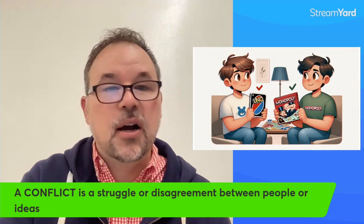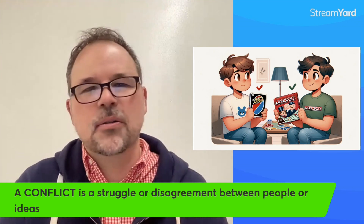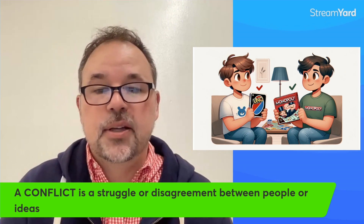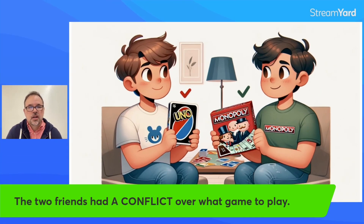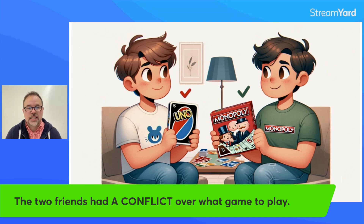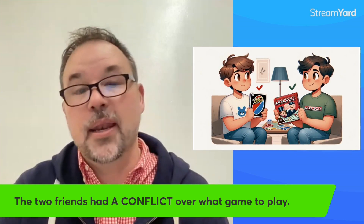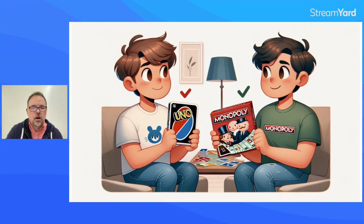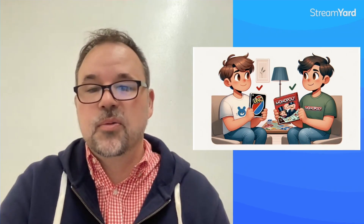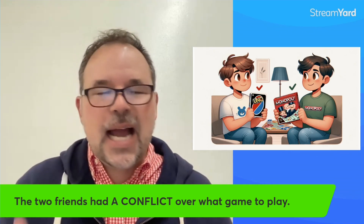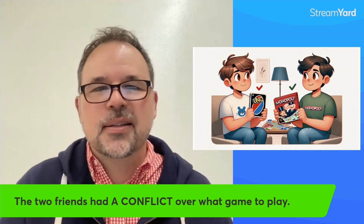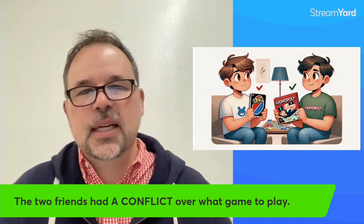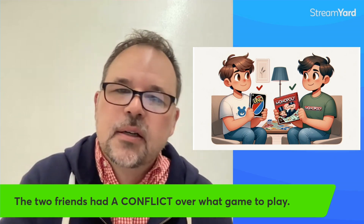The next one is 'conflict.' A conflict is a struggle or disagreement between people or ideas. In the picture, maybe there are brothers or twins — one is clearly a Monopoly fan with a Monopoly t-shirt and is holding a Monopoly box, while the other wants to play Uno and has Uno cards on the table. Which do you like better — Uno or Monopoly? I have to go with Uno because it's a quick game; Monopoly takes too long. Sentence: The two friends had a conflict over what game to play.